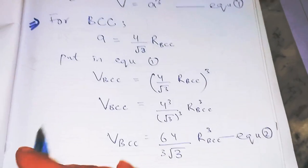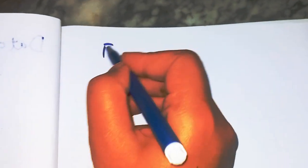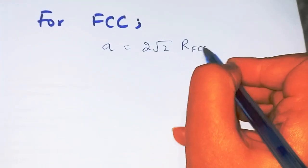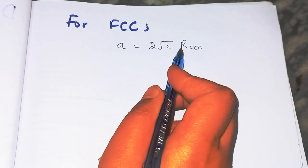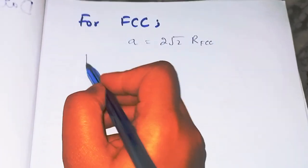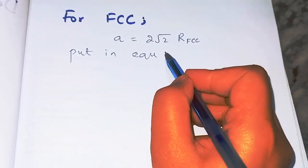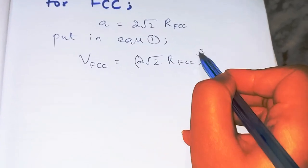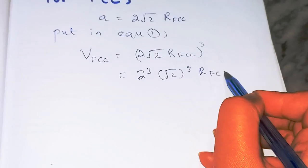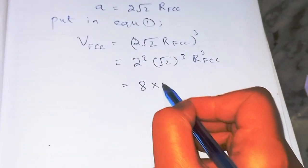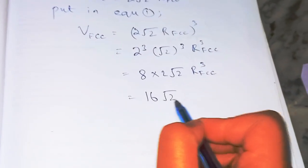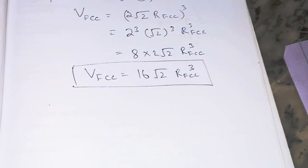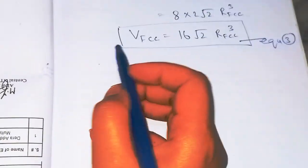For FCC, the relationship between lattice parameter and atomic radius is: a = 2√2 × r_FCC. Substituting into equation one gives the volume of the FCC unit cell: V_FCC = (2√2 × r_FCC)³ = 8 × 2√2 × r_FCC³ = 16√2 × r_FCC³. This is equation number three.